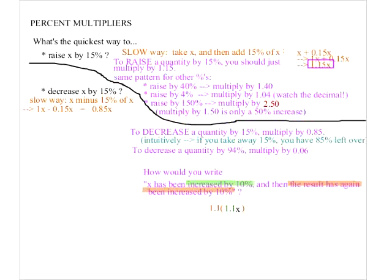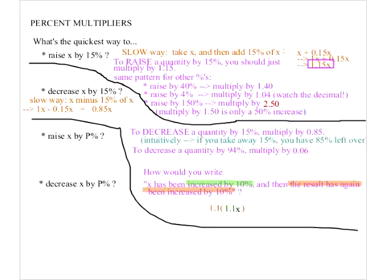Here are two more rules you can use. If you want to increase something by a variable percentage p, then to raise something by p%, you multiply by the quantity (1 + p/100). And if you want to decrease it by p%, then you multiply by the quantity (1 − p/100).